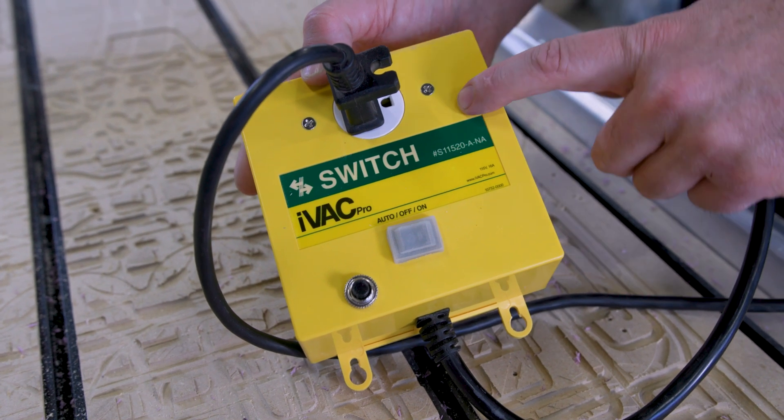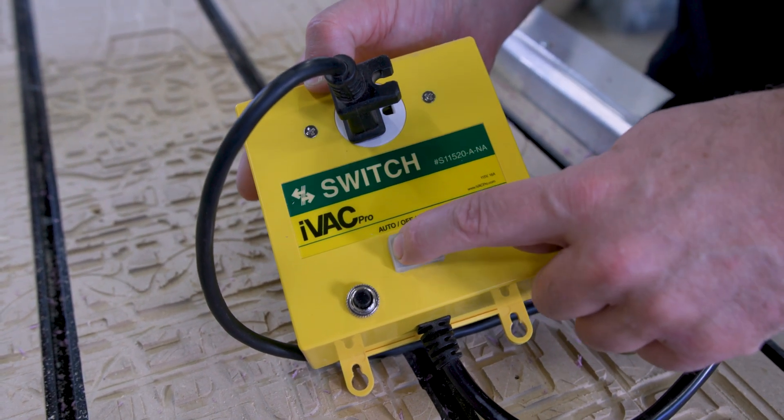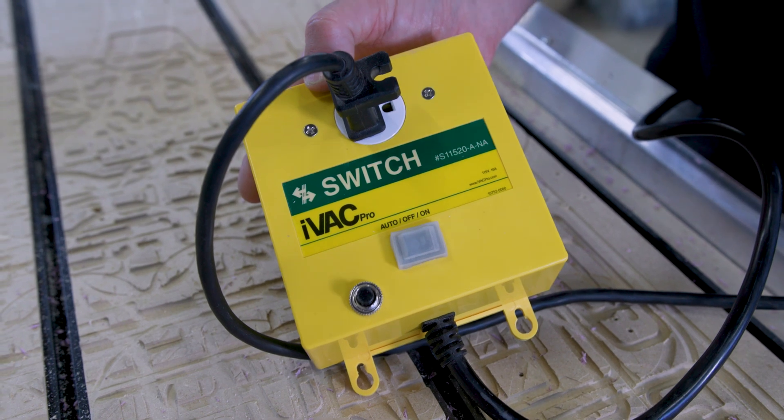On the vacuum side, on the iVac switch, you want to put it into auto mode. That way it can receive the signal sent from the transmitter.